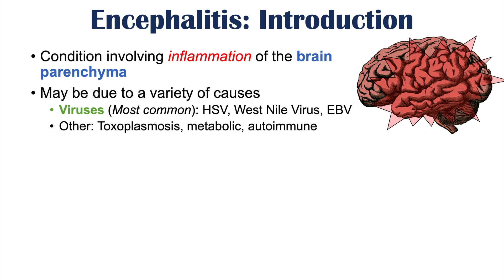There are other infective organisms and conditions that can lead to encephalitis as well. Some of these include the protozoa known as toxoplasmosis, metabolic conditions, and autoimmune conditions like anti-NMDA receptor encephalitis or lupus encephalitis.